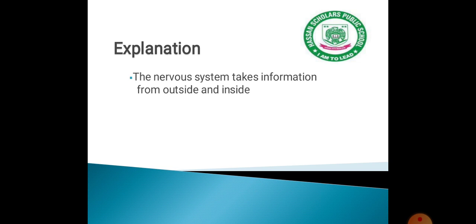Now let's see the explanation of how the process happens. The nervous system takes information from both outside and inside the body. The circulatory system, excretory system, and internal organs also give information — internal organs provide internal information, while external sources provide external information.